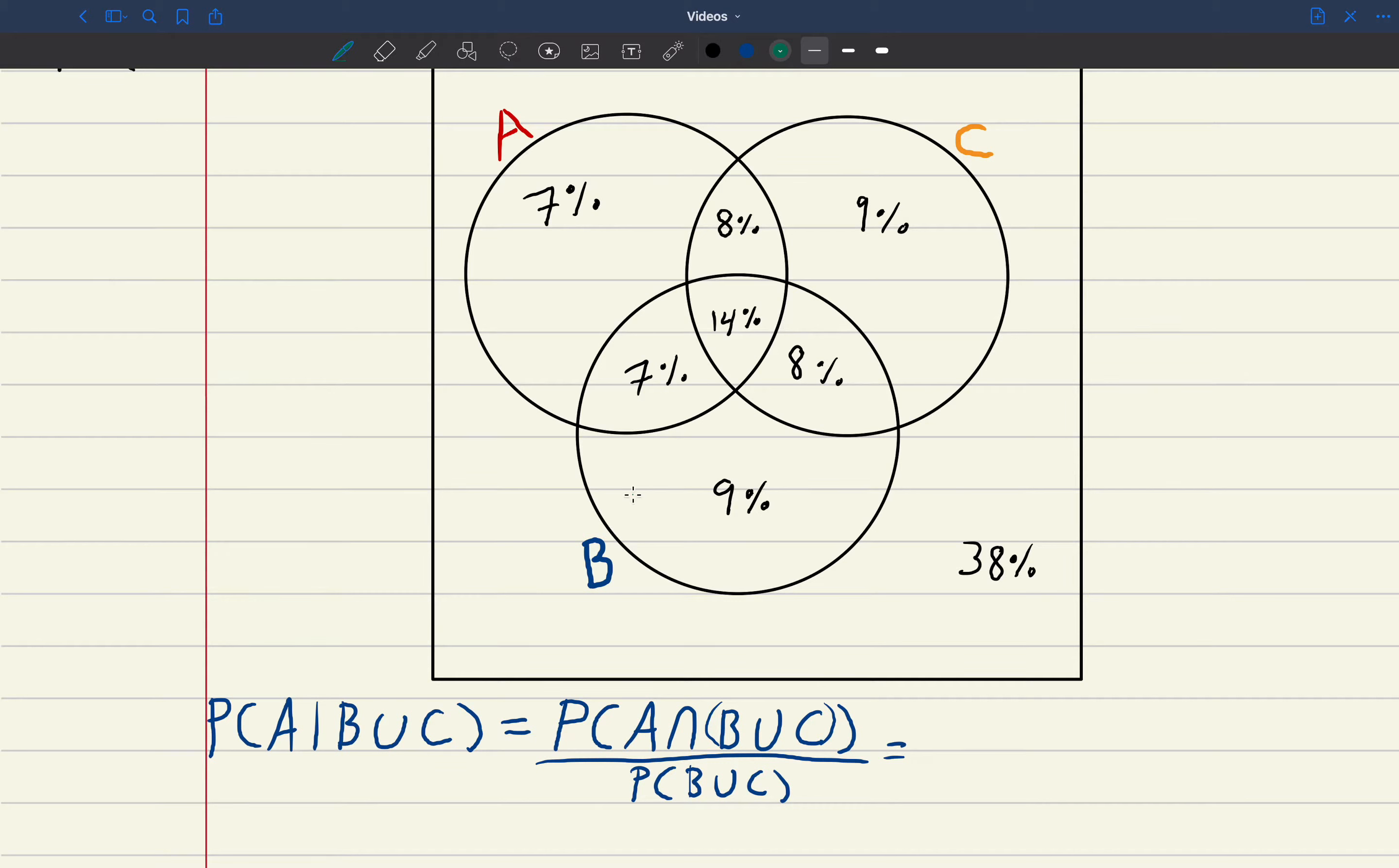Well, B or C is anything inside these circles. So that is B or C. What part of that has in common with A? That would be this portion right here.